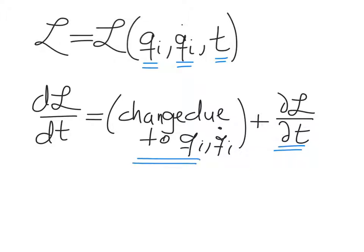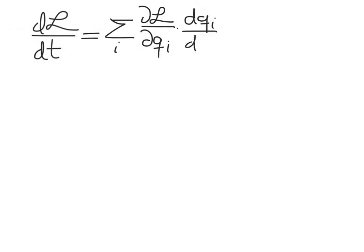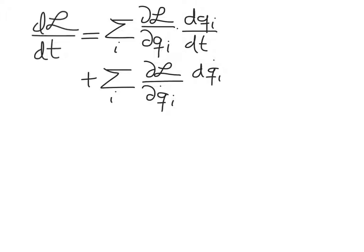Let's look at what this first term works out to be. The full time derivative of the Lagrangian is equal to a sum over all coordinates i of the partial of the Lagrangian with respect to coordinate qi times the time derivative of qi, plus a sum over i of the partial of the Lagrangian with respect to the generalized velocity qi dot times dqi dot/dt. And then, as already mentioned, there can be an explicit time dependence.